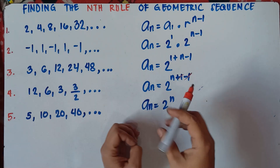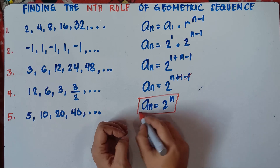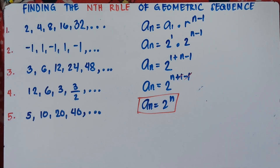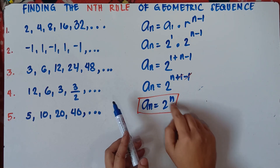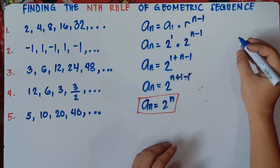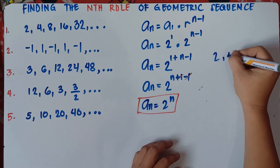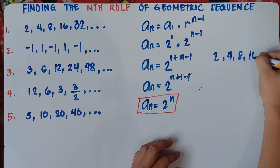So this will be a sub n equals 2 raised to the power of n. And this will be your equation class — the simplified equation. Even if we check this one, substitute the value of n. So once again, we have the sequence: 2, 4, 8, 16, and 32.